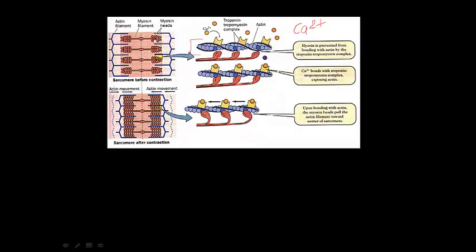At rest, the myosin crossbridges are not bound to the actin, so they can't generate tension or force. What's going to happen is a motor neuron is going to stimulate the muscle fiber. When the muscle fiber is stimulated, the calcium that's in the sarcoplasmic reticulum is going to be released into the muscle fiber. That calcium — represented by this little orange ball — is going to bind to the actin. And when calcium binds to the actin, it opens the active site, so now the myosin can bind to this active site on actin.